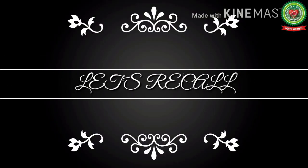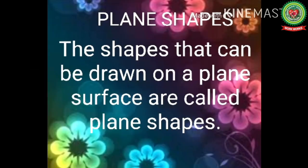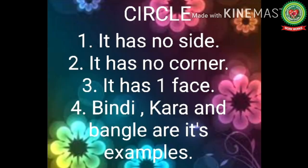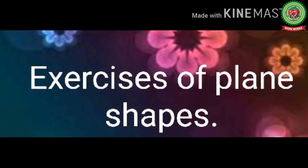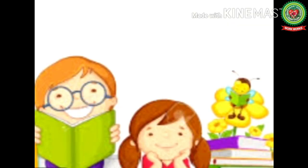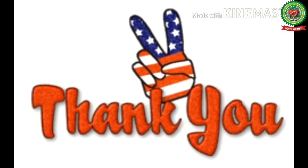Now let's recall what we have learnt today. First, we revised plane shapes and their examples. Then we learnt about circle — that it has no side, no corner, one face, and that bindi, kada, and bangle are its examples. Then we practiced some exercises of plane shapes. I hope you all have understood. Open your snap homework and do your work. Thank you.